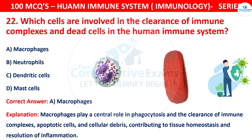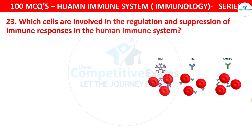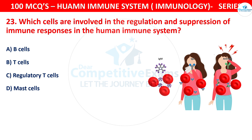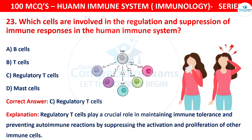Question 23: Which cells are involved in the regulation and suppression of immune responses in the human immune system? Your options are B cells, T cells, Regulatory T cells, or Mast cells. The correct answer is C, that is Regulatory T cells. Regulatory T cells play a crucial role in maintaining immune tolerance and preventing autoimmune reactions by suppressing the activation and proliferation of other immune cells.